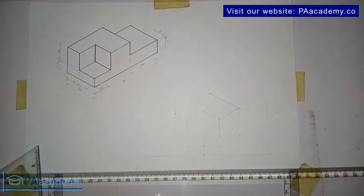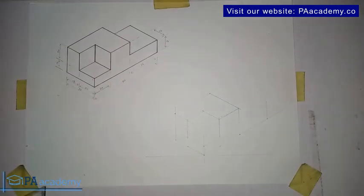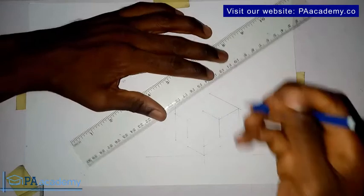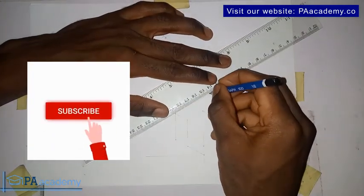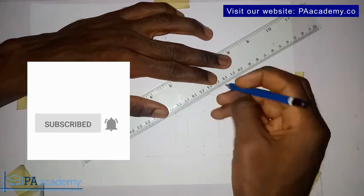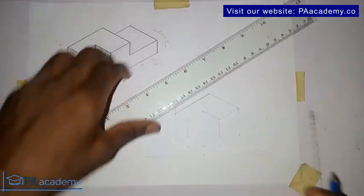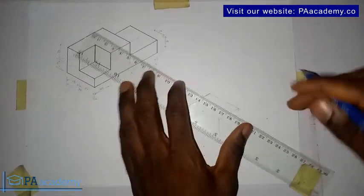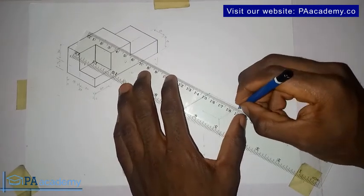So now for this part that I've just drawn, let me just make it bold so that we can see the progress we've made so far. Remember I started working with faint lines because, like I said earlier, that's the best approach, especially if you are a beginner with isometric projection.